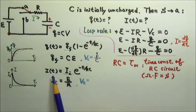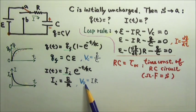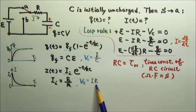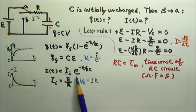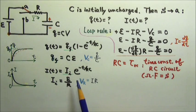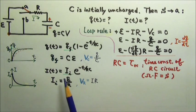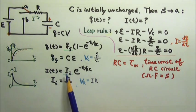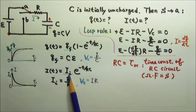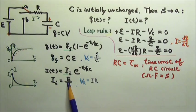A problem may also ask about the voltage across the resistor instead of the current as a function of time. In that case, we use V equals IR, so all we have to do is multiply the current by R. So the voltage across the resistor is also in exponential decay format — what goes here is the initial voltage across the resistor, which is I times R, meaning it's also the EMF.